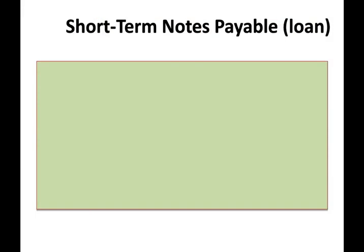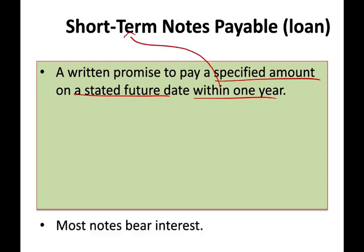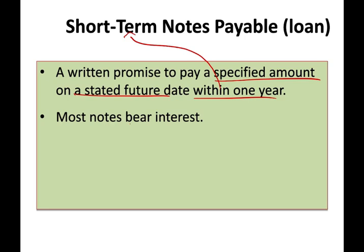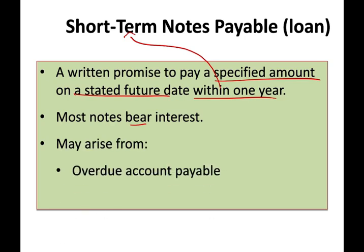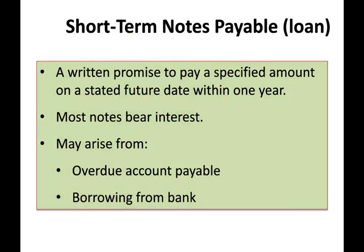A short-term note is basically a loan — a written promise to pay a specified amount of money on a future date within one year, which is why it is called short term. Most notes bear interest, meaning the interest rate is stated so you know what it will be. A note may arise from an overdue accounts payable, from borrowing money from a bank, or sometimes from buying a vehicle.